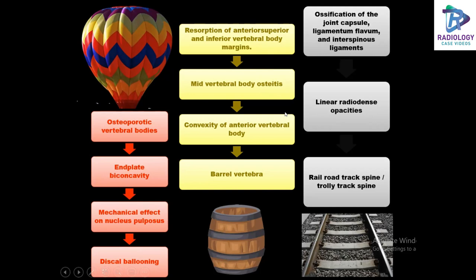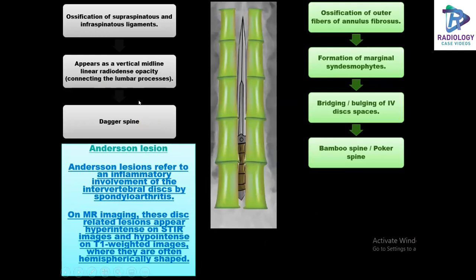The railroad or trolley track spine involves ossification of the joint capsule, ligamentum flavum, and interspinous ligaments causing linear radiodense opacities. The dagger spine is caused by ossification of the supraspinous and infraspinous ligaments, appearing as a vertical midline linear radiodense opacity connecting all the lumbar processes. Ossification of the outer fibers of the annulus fibrosus, formation of marginal syndesmophytes, and bridging of the intervertebral disc spaces causes the bamboo spine.